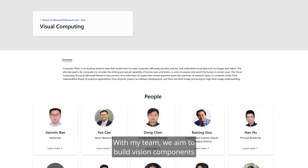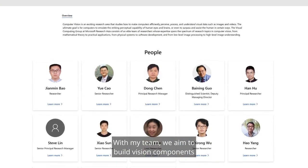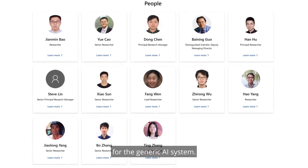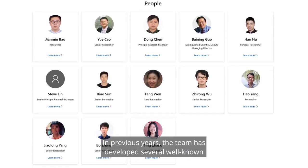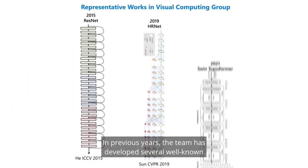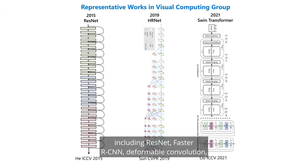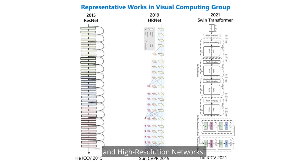and I am a Principal Researcher and Research Manager in the Visual Computing Group at Microsoft Research Asia. My research focuses on cutting-edge technologies for computer vision. With my team, we aim to build vision components for the generic AI system. In previous years, the team has developed several well-known and widely-used innovations, including ResNet, Faster R-CNN, Deformable Convolution, and High-Resolution Networks.